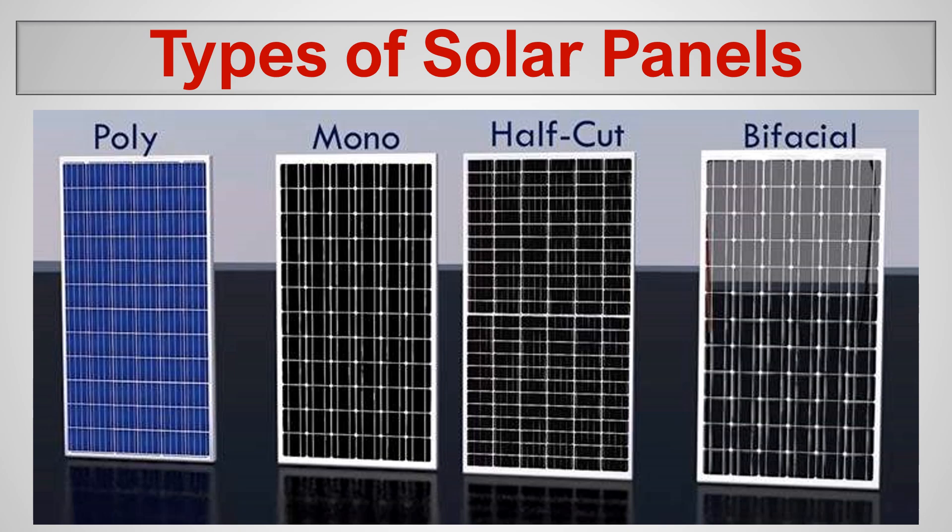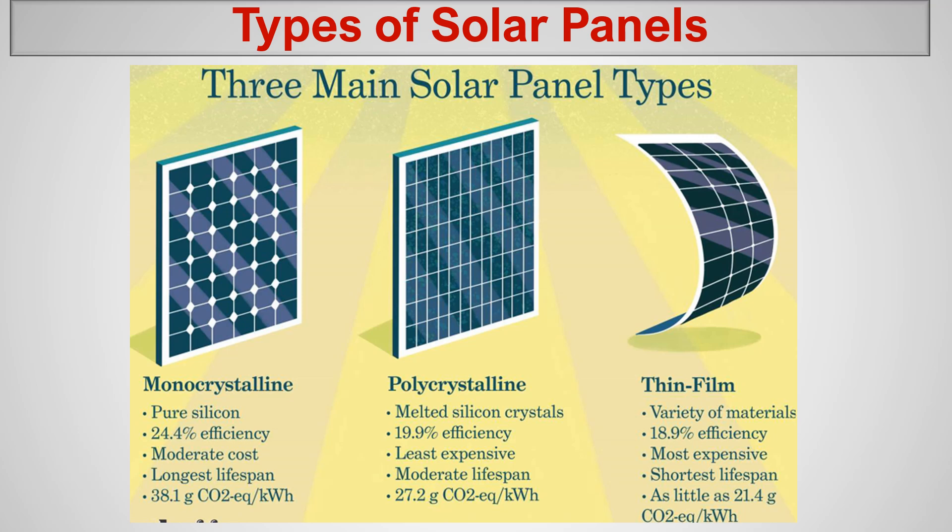Hello everyone. Today we are going to discuss the material aspects of solar panels. There are different types of materials used for solar panel manufacturing. If you look at this picture, we are usually using the polysilicon type, monosilicon type, half-cut solar panels, and bifacial solar panels. The half-cut and bifacial are new additions to the solar industry. Let's look at them one by one.